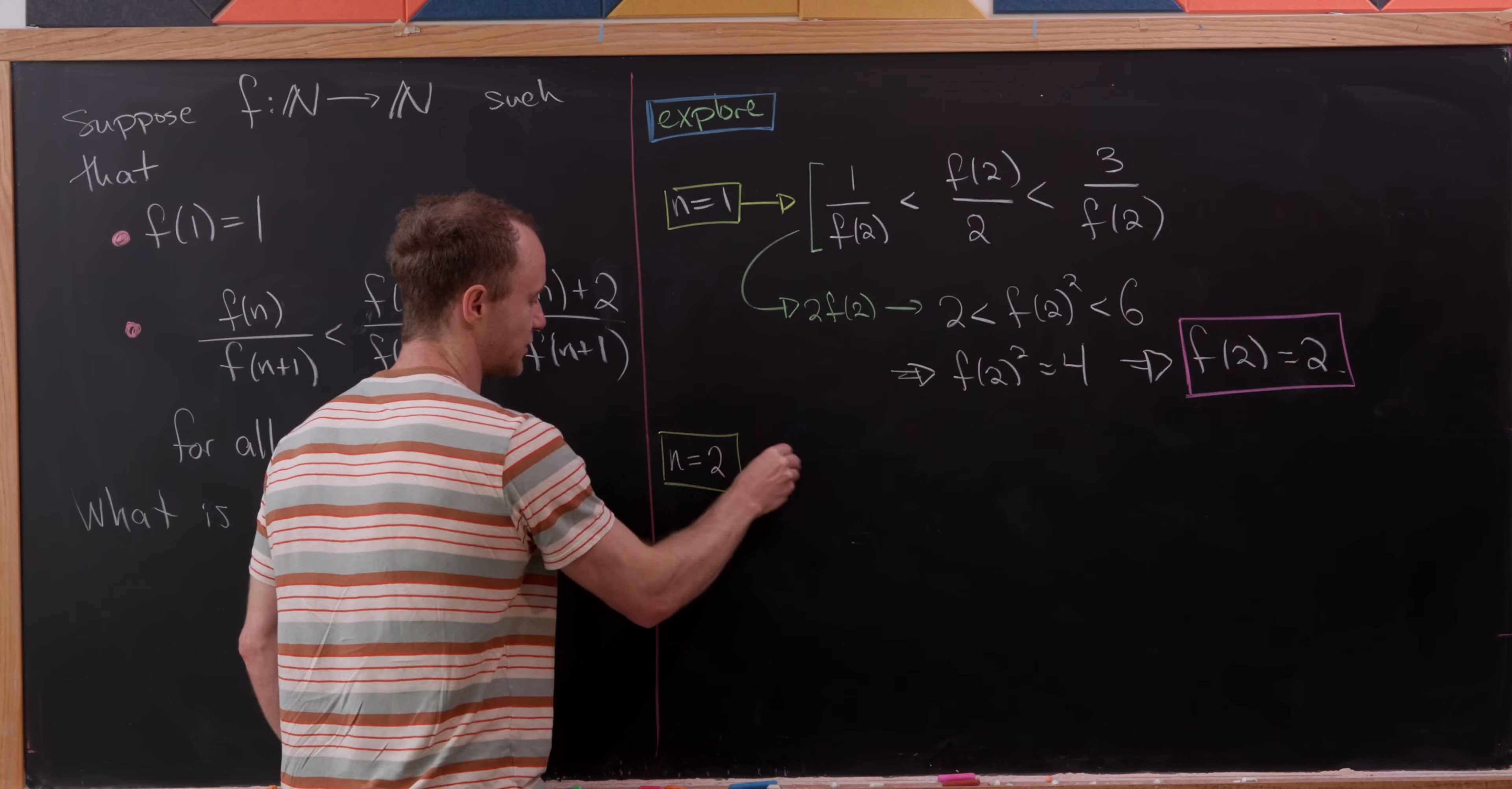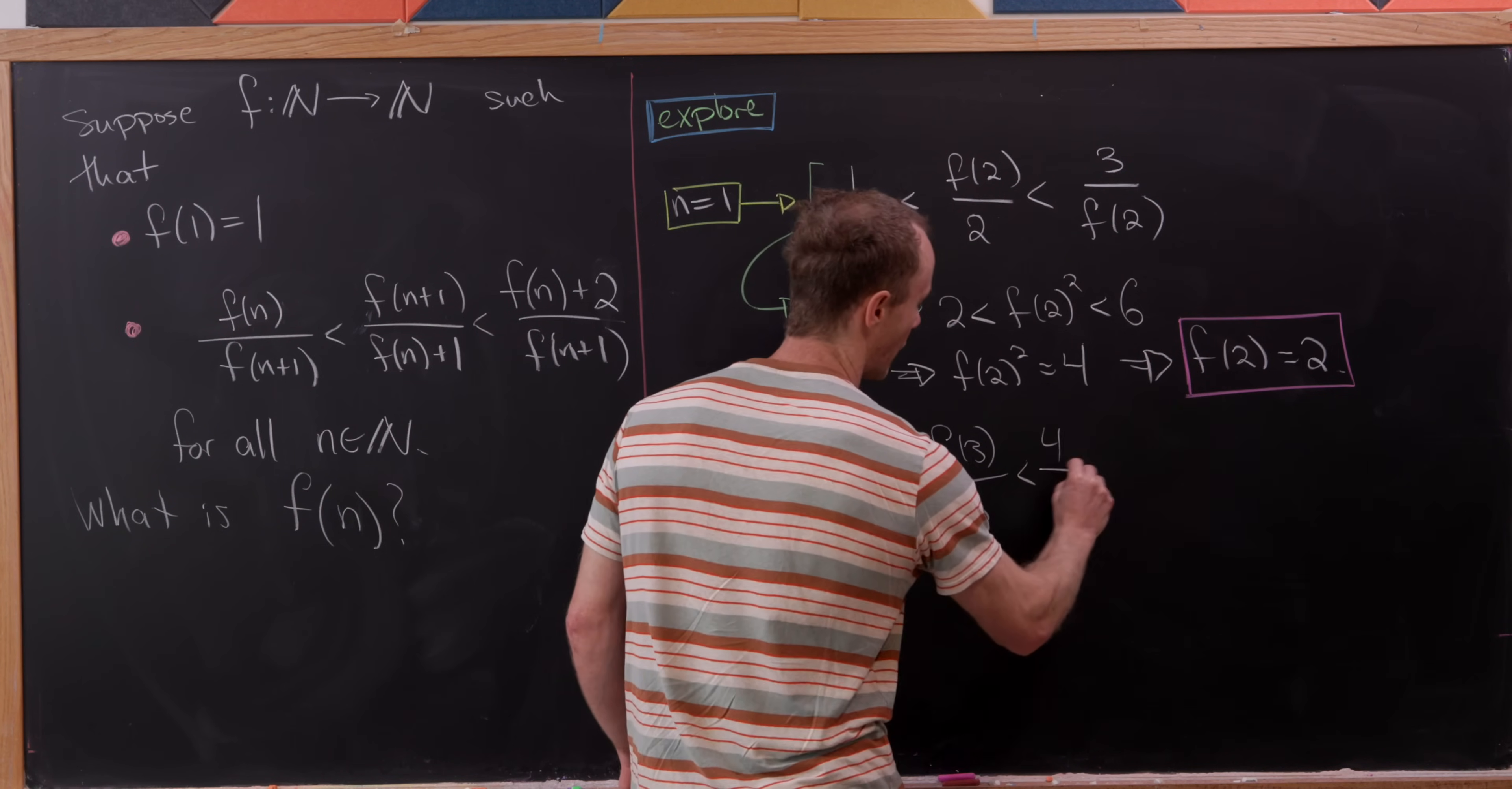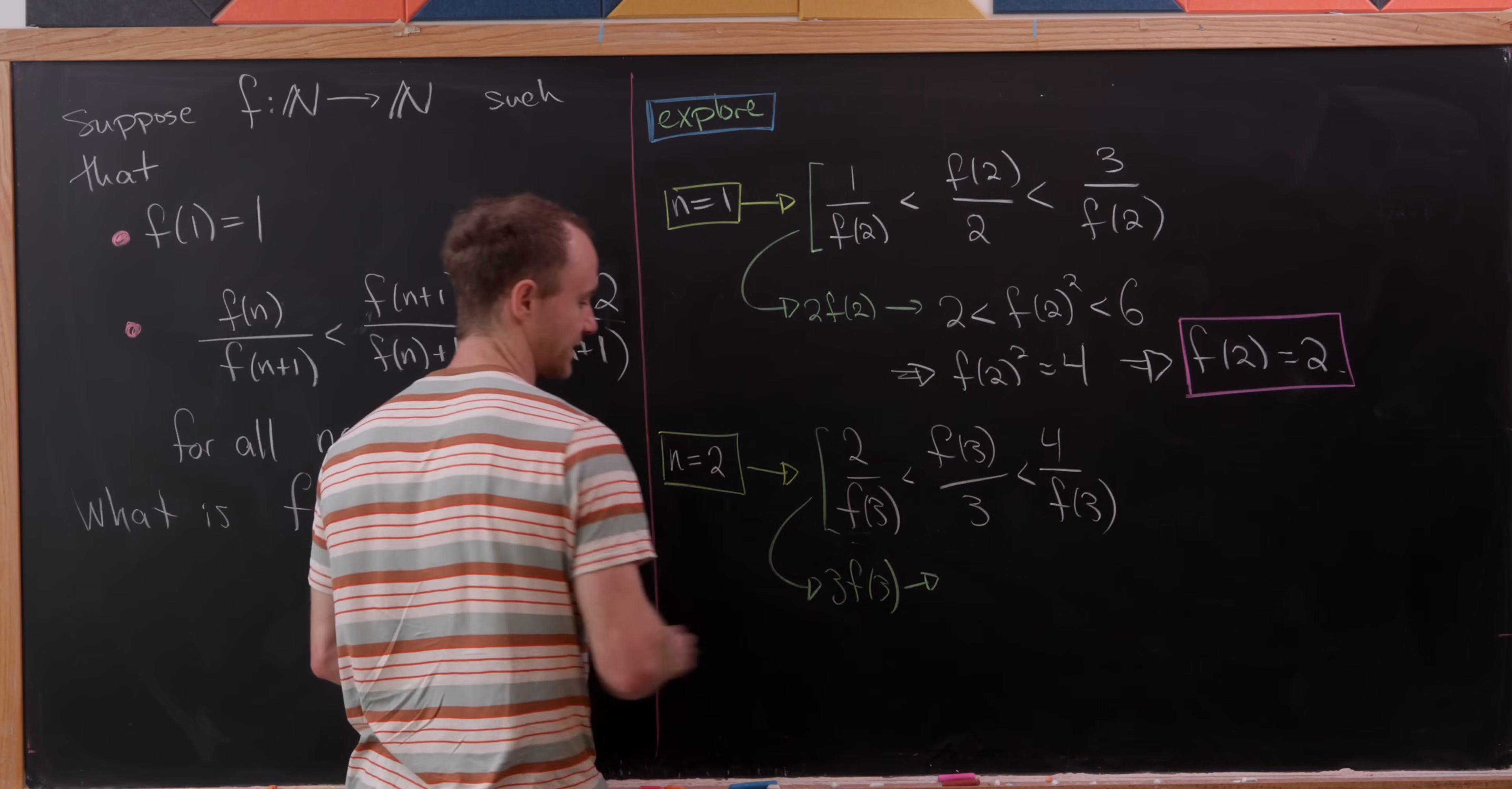So let's plug in n equals two. That's going to give us two over f of three is less than f of three over three, which in turn is less than four over f of three. But now what we'll do is take this and multiply the whole thing by three times f of three and hopefully get some simplification.